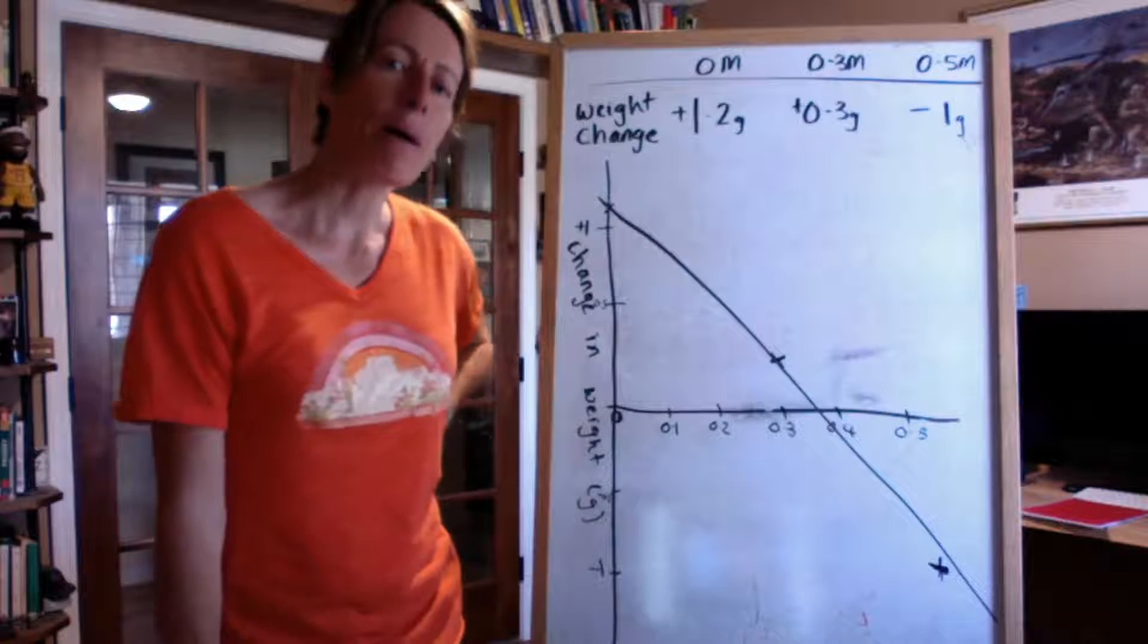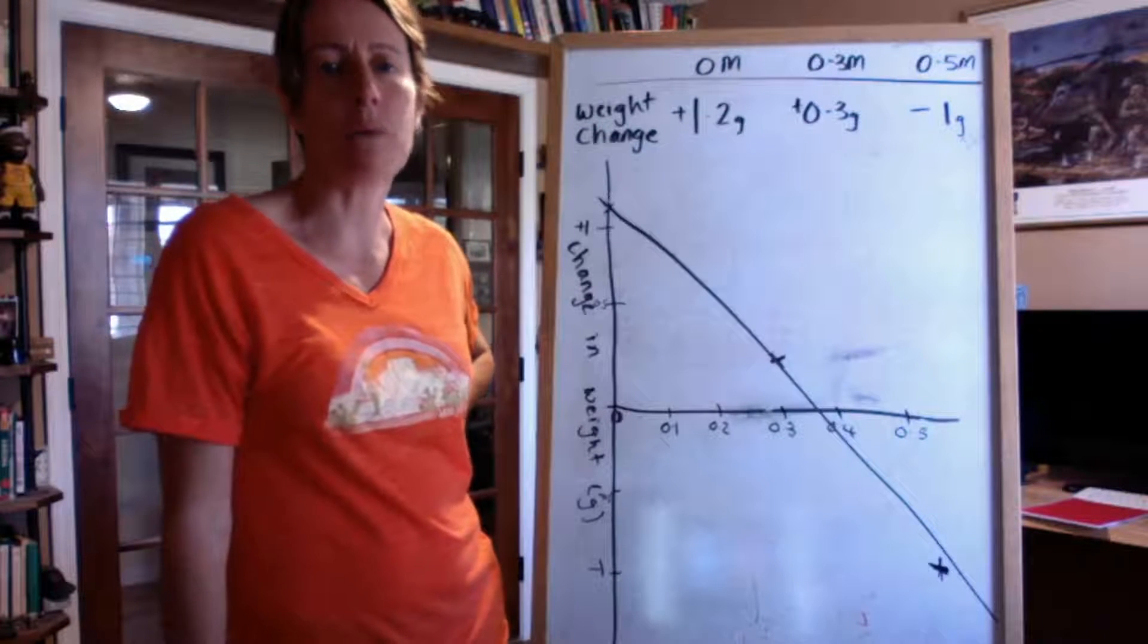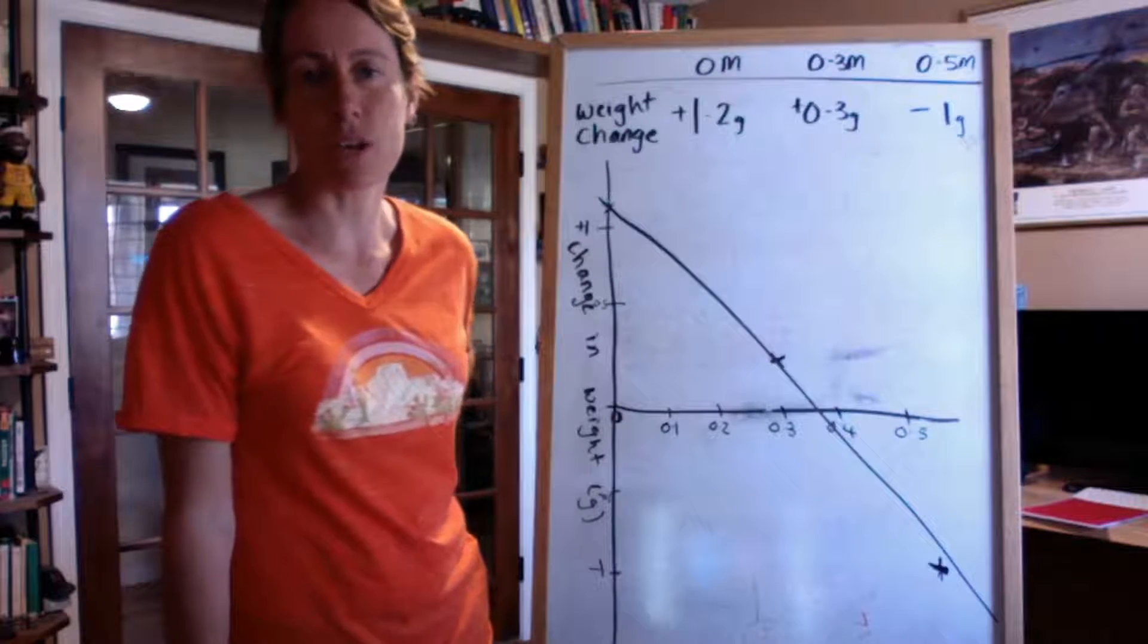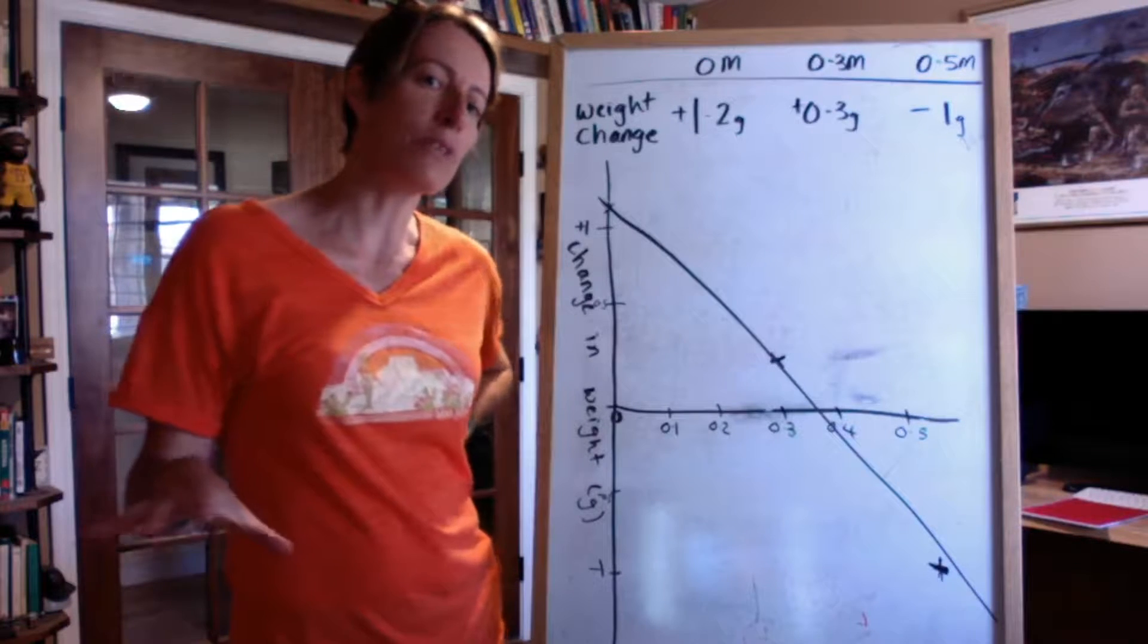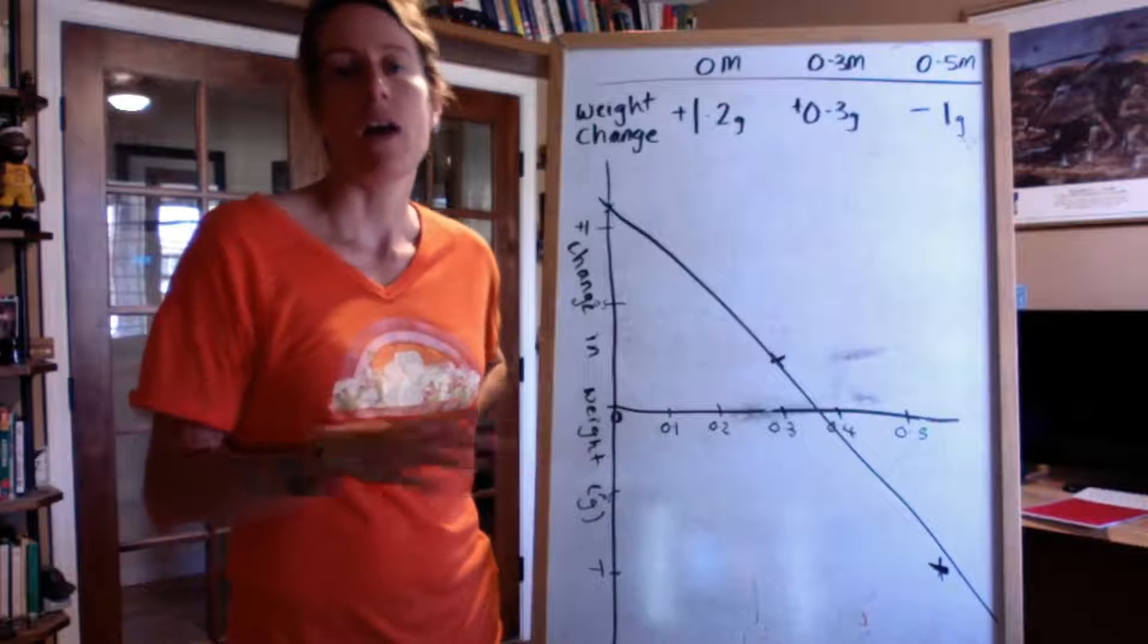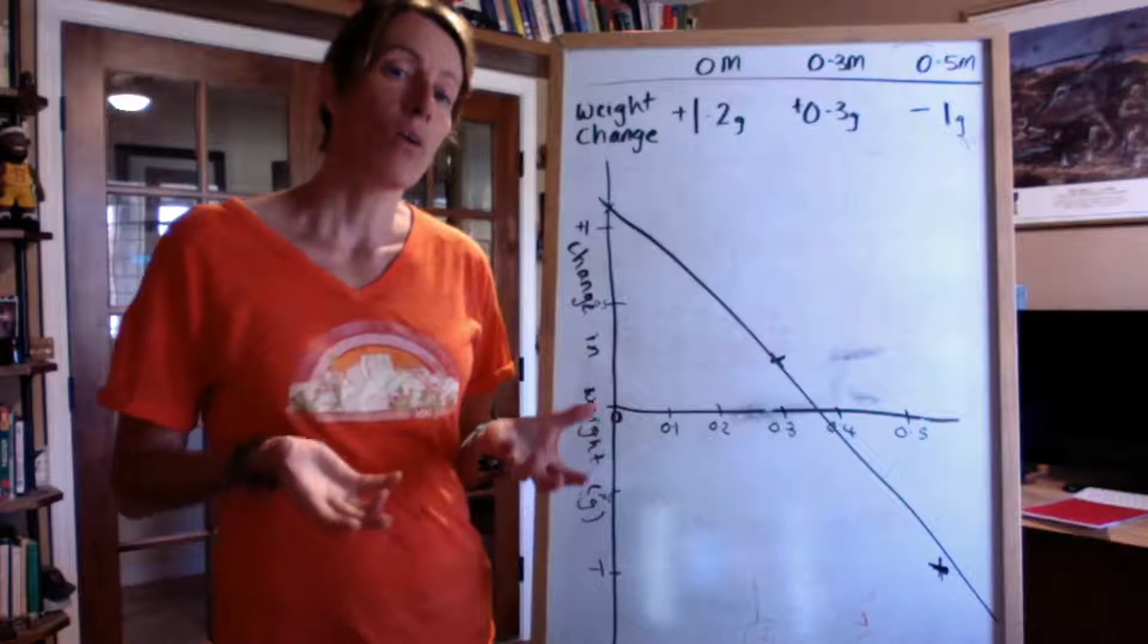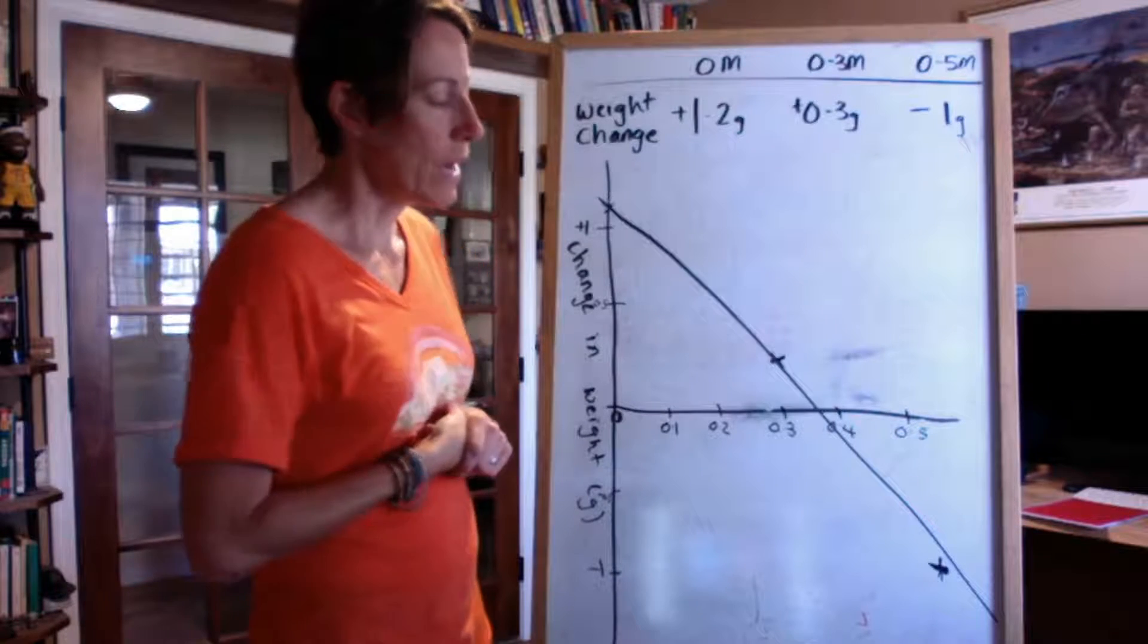But think about what would happen if you bathed your potato in a solution that was isotonic to the potato cells. Iso means the same concentration as. So if the potato cells were a certain concentration and the outside solution was the same concentration as what was inside the potato, overall, there would be no water movement. Water wouldn't move in. Water wouldn't move out. The potato cell would not change its weight. It would stay the same.